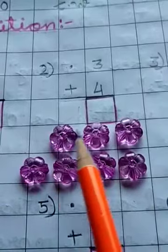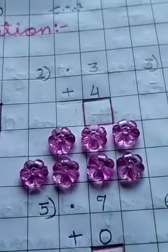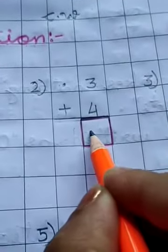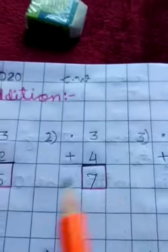So the total is 1, 2, 3, 4, 5, 6, 7. So you have to write 7 here. Like this. Now again in this line.